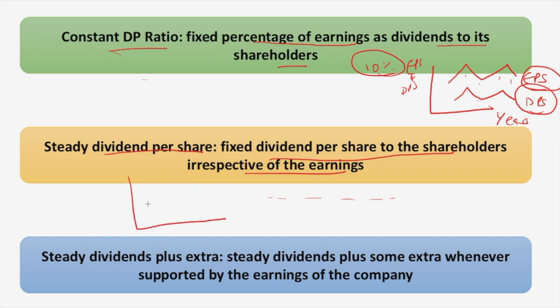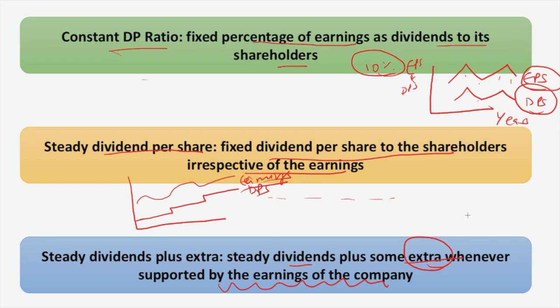The third policy is steady dividends plus extra: a steady dividend is given plus some extra amount whenever supported by the company's earnings. This extra amount is considered a bonus paid to shareholders as a result of an unusually good year for the firm. With this we've completed five finance questions for today. Don't forget to answer the homework question on the difference between ECB and IDRs. Do subscribe to our channel for more regular updates. Thank you for watching!